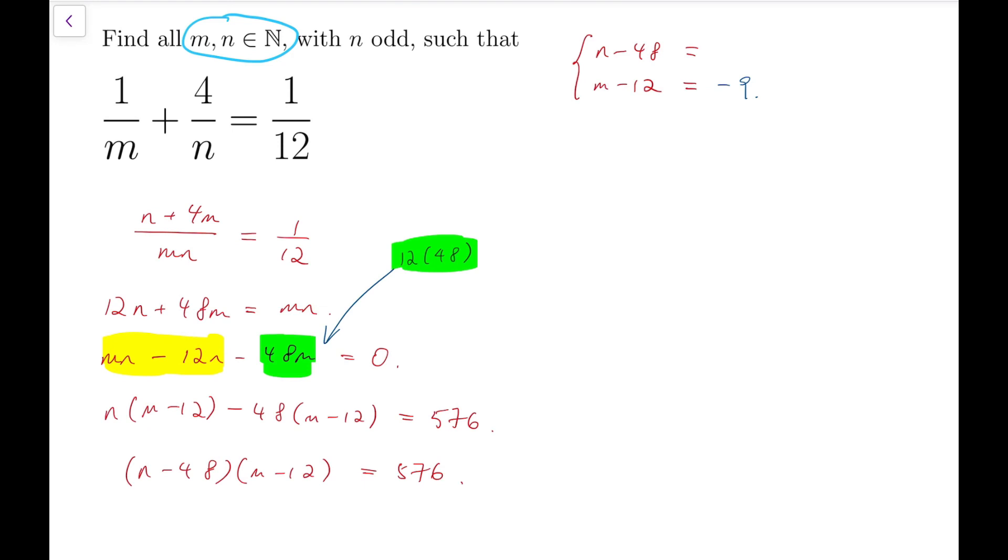Now, in this case, I can still satisfy the fact that m is a natural number by assuming that n minus 12 is then a number that is between minus 12 and 0. So we can still have m to be positive.